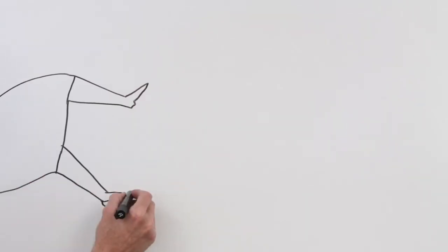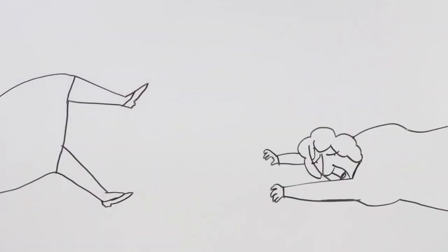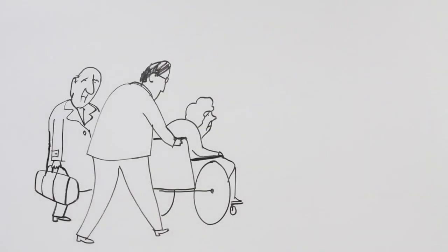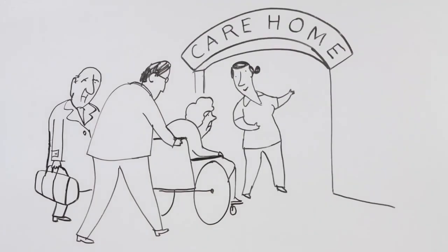Seven weeks after her discharge from hospital, June had fallen twice more. Her memory was worsening, and Arthur was becoming stressed, concerned, and exhausted. June ended up being admitted for respite to a local care home.